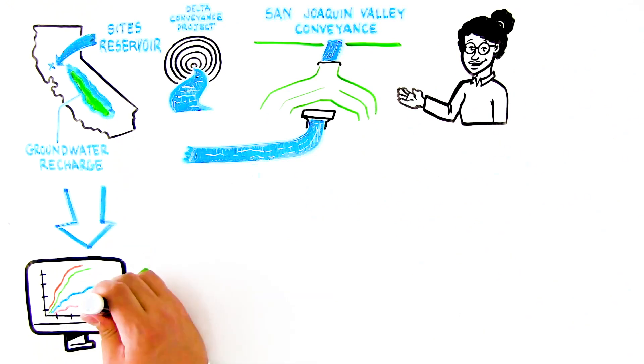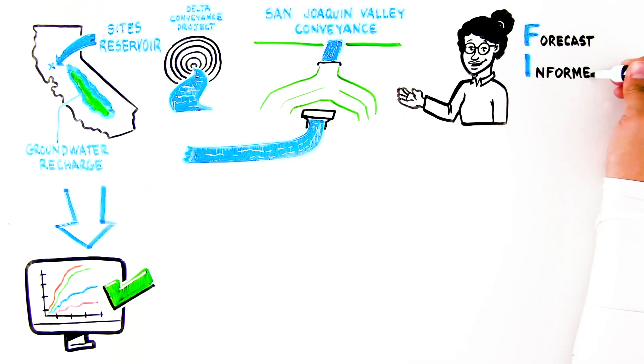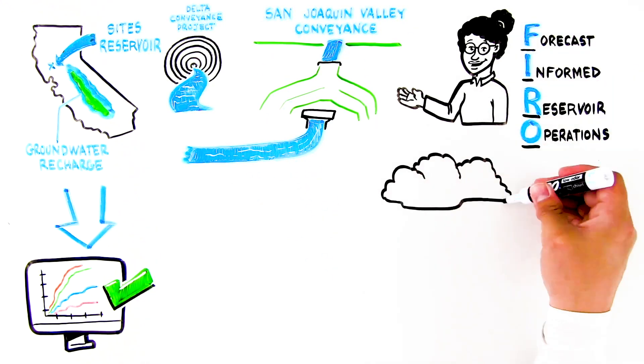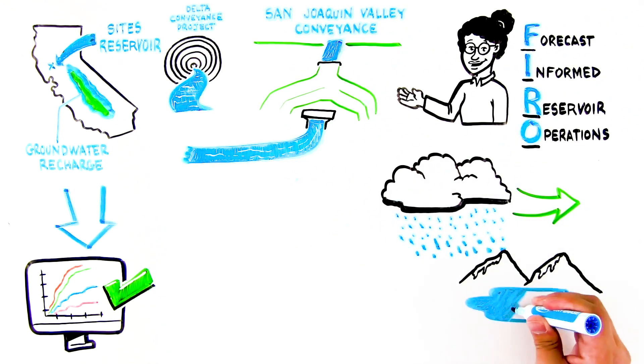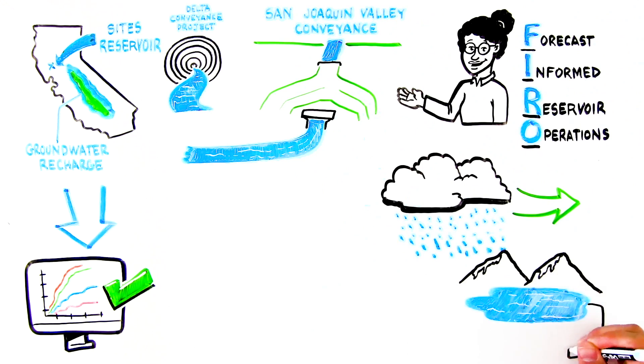Forecast-informed reservoir operations take advantage of scientific improvements in forecasting to better anticipate and manage large storm events and would improve California's flexibility in managing our water supply.